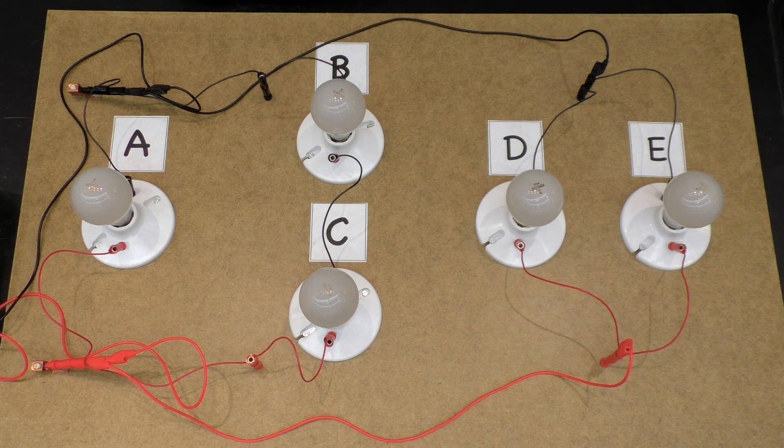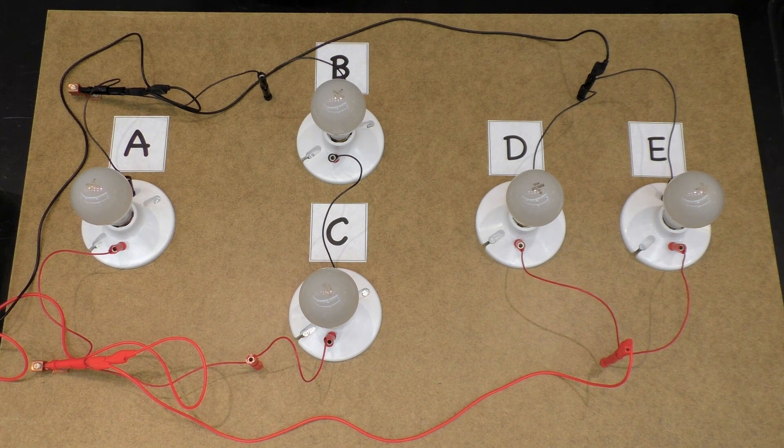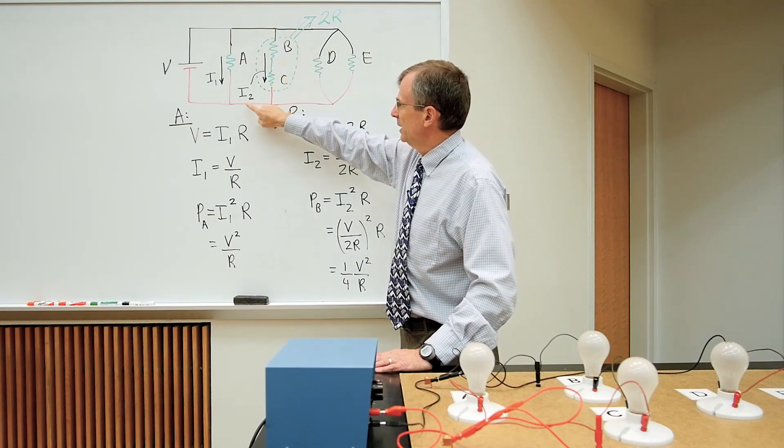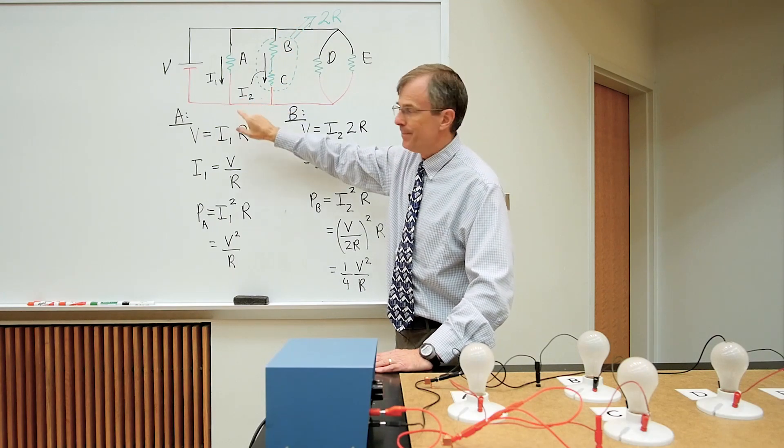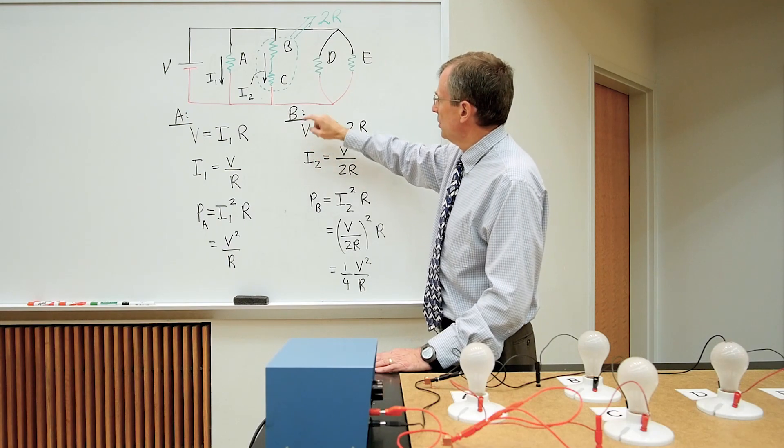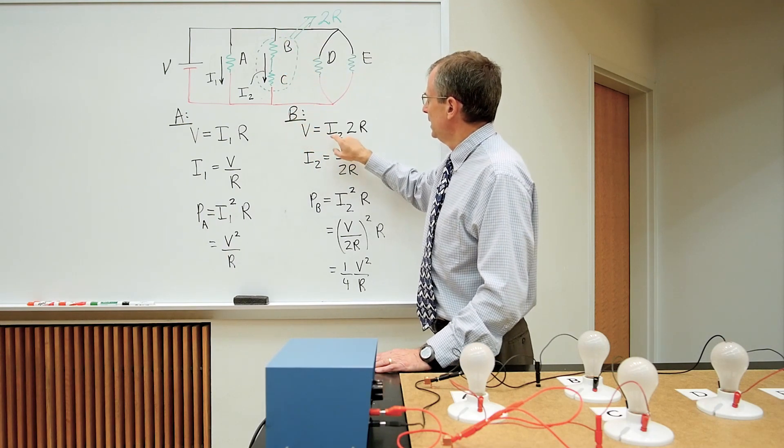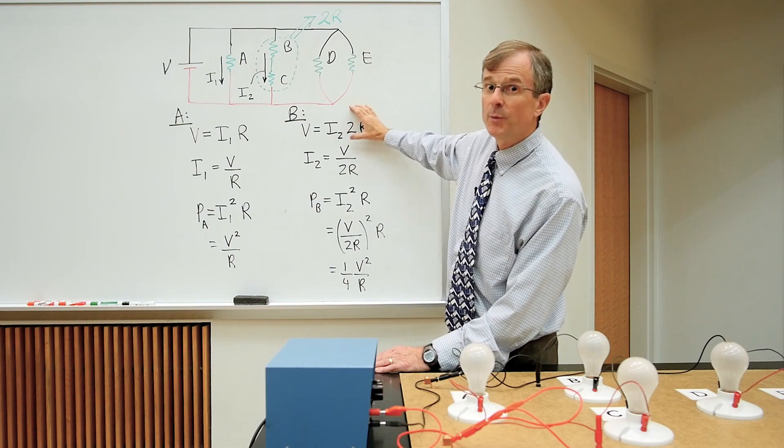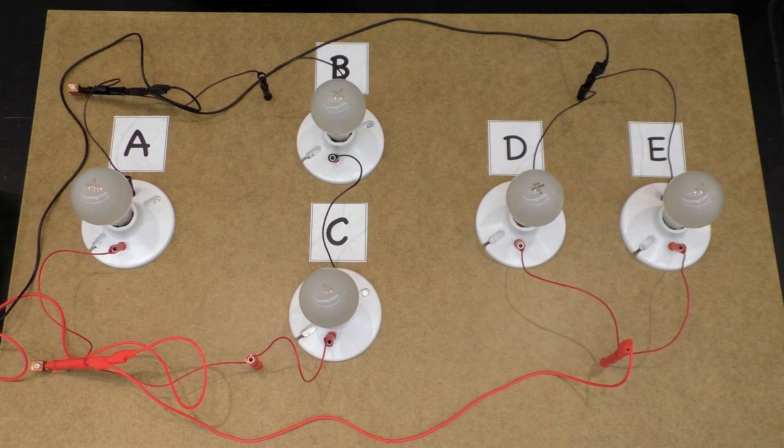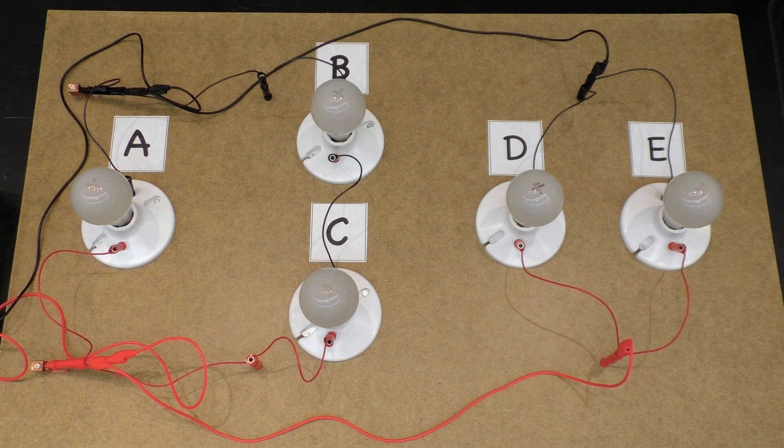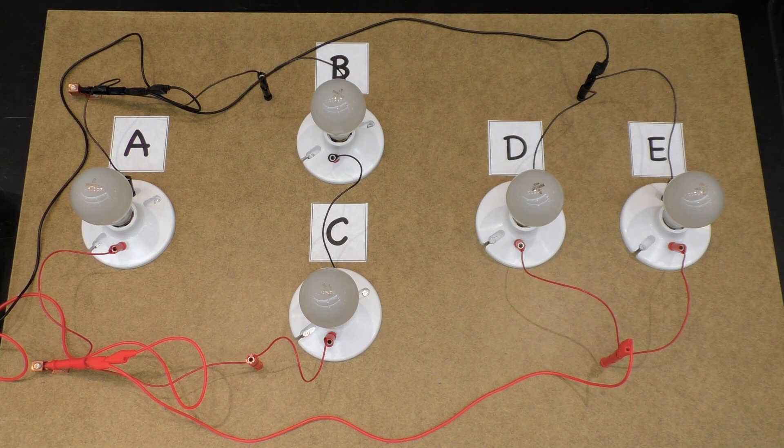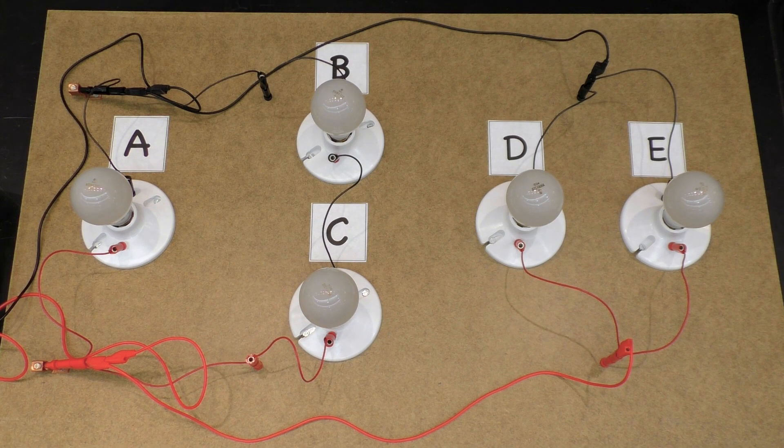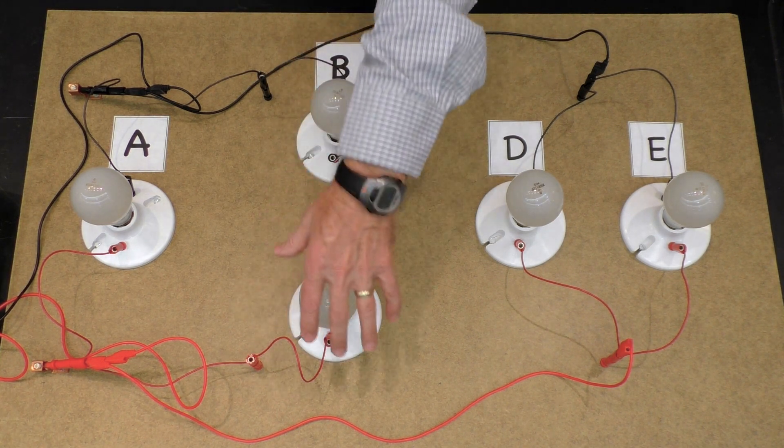For bulb B, we're going to first have to find the current through this branch of the circuit. I'm calling that I2, and the voltage across this piece of the circuit is I2 times the equivalent resistance through this branch of the circuit. When you have two resistors that are in series with each other, the equivalent resistance is twice the resistance, or as you add up the resistances of these two resistors.